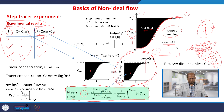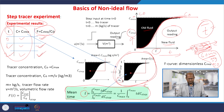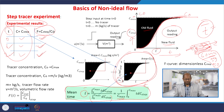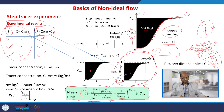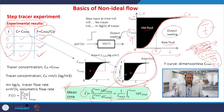Mean time for step experiments is expressed as: T_m = (1/C_max) × integral from 0 to C_max of t dC_step. These equations we can use to find out the mean time once we conduct the step tracer experiments.